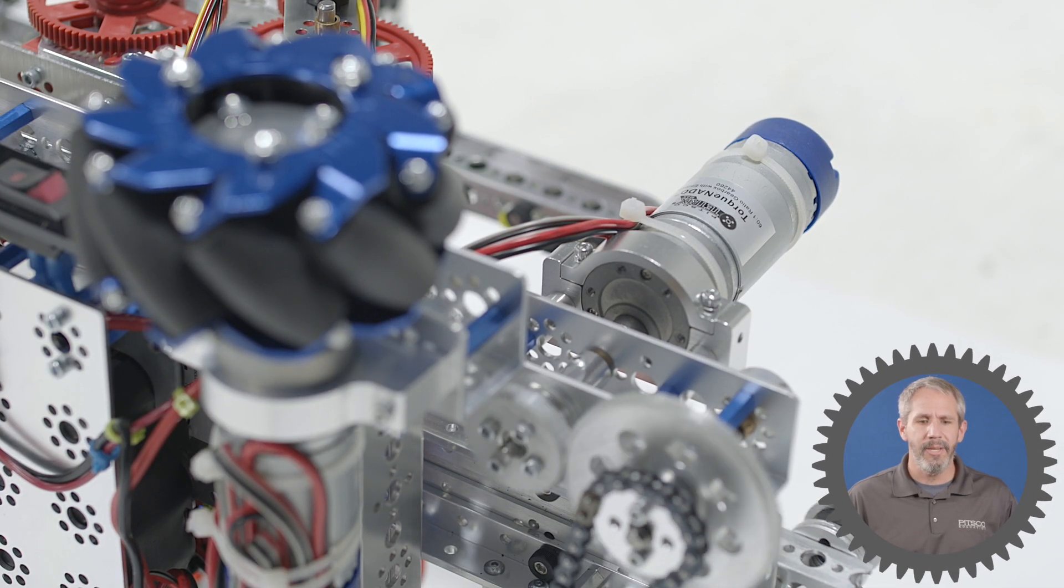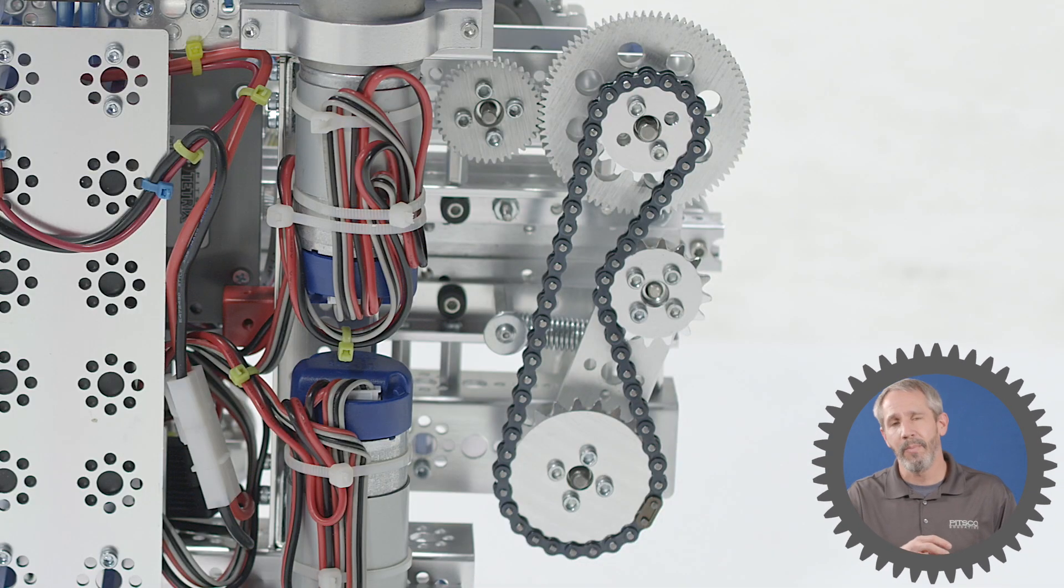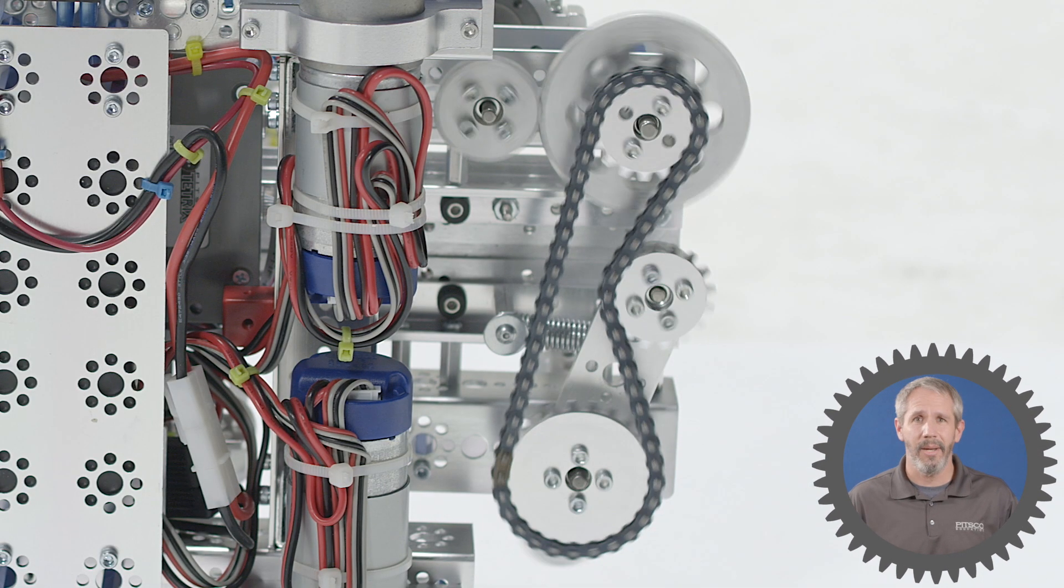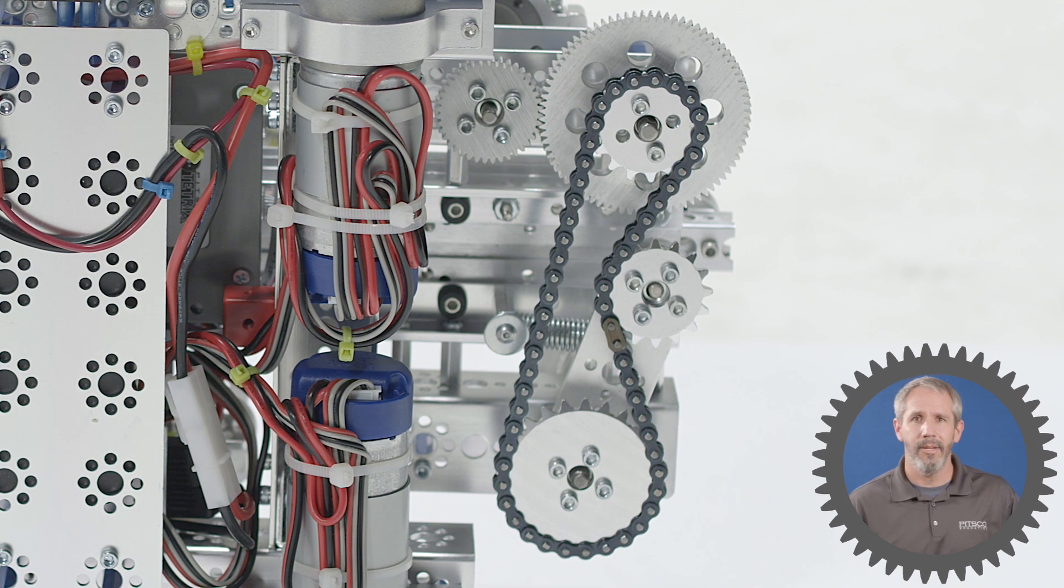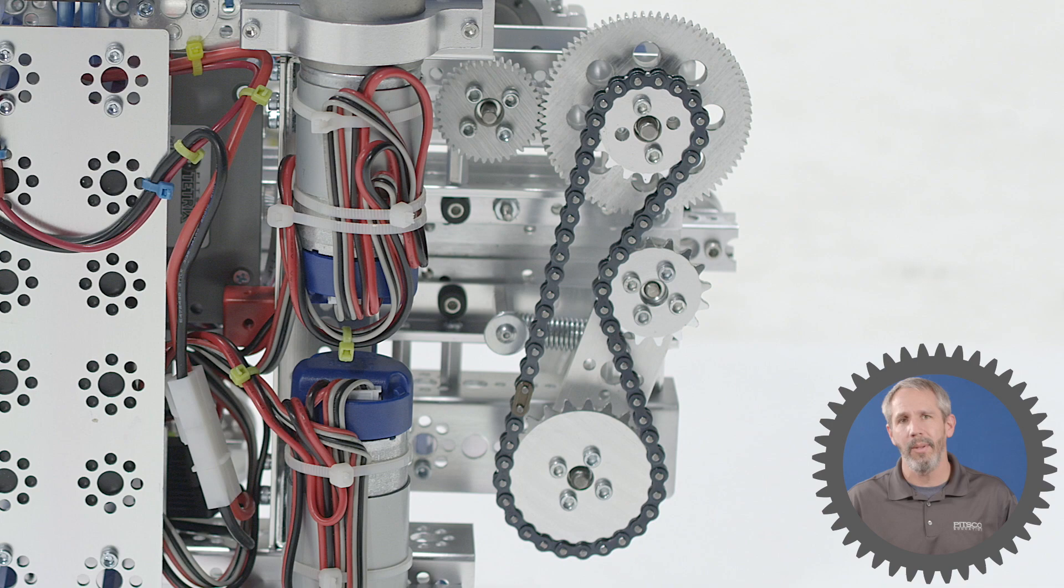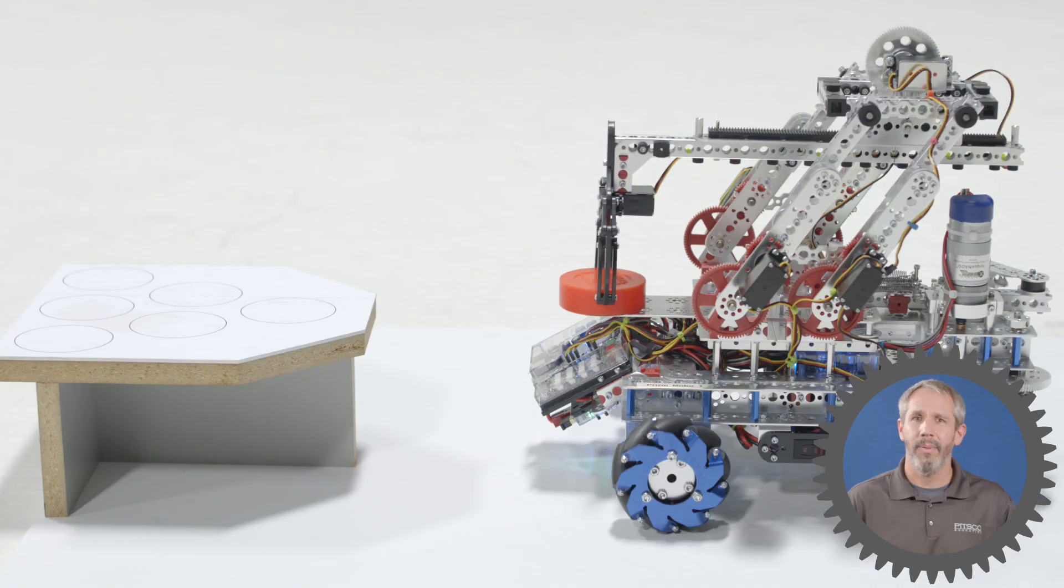Another disadvantage is that the cocking system to pull the striker back can be complex a lot of times. We're using a Torquenado here that's geared up with this gear train to give us more torque to pull it back, but that system can be complex sometimes.